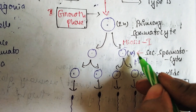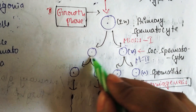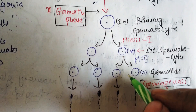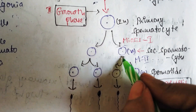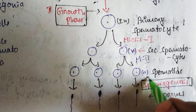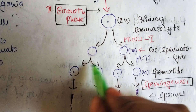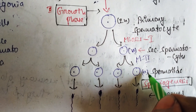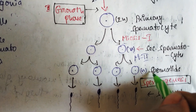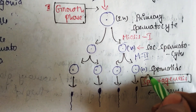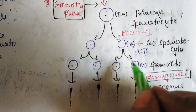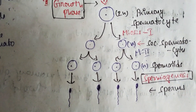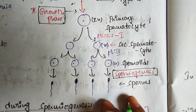After meiosis 2, four daughter cells are formed in total — these are haploid in nature and are called spermatids. So after meiosis 2, the spermatids are formed.